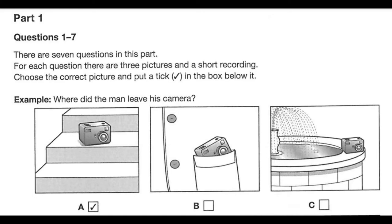Where did the man leave his camera? Oh no, I haven't got my camera. But you used it just now to take a photograph of the fountain. Oh, I remember. I put it down on the steps while I put my coat on. Well, let's drive back quickly. It might still be there. The first picture is correct, so there is a tick in box A.